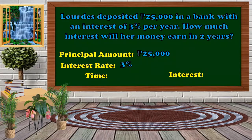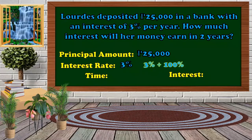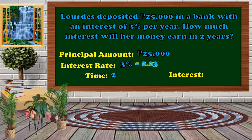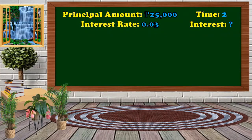We need to convert the interest rate to its decimal form by dividing by 100%, giving us 0.03. The time is 2 years. Those are the identified quantities, and we're going to look for the interest.